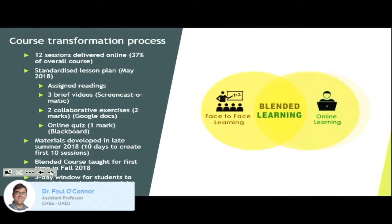The course transformation process: the first thing was designing the blend itself. Initially I decided on blending 10 classes online, and eventually, because it seemed to be going quite well, I increased that to 12. So 37% of the course was delivered through online methods, the rest through the traditional face-to-face class. I wanted a good section of it online, but I didn't want to go beyond that because as a fairly early course within students' experience of sociology, I wanted them to have a certain amount of face time with myself as the lecturer.